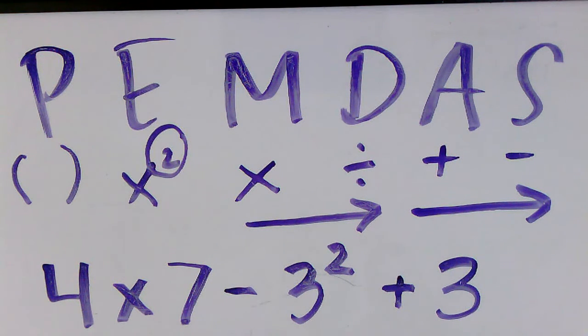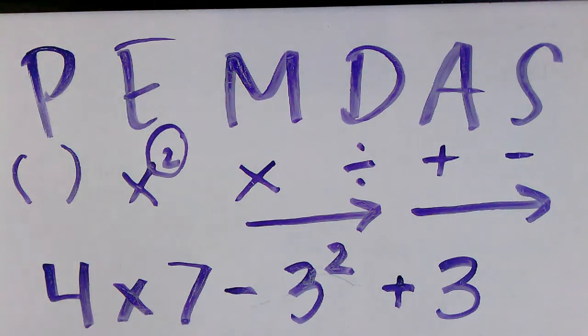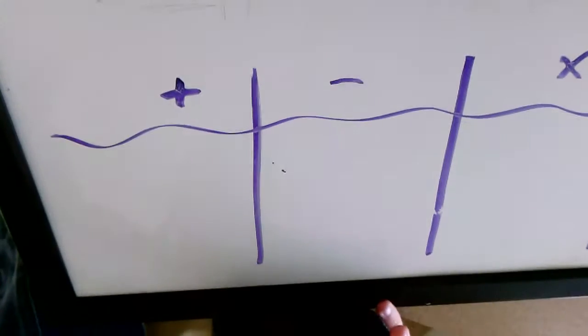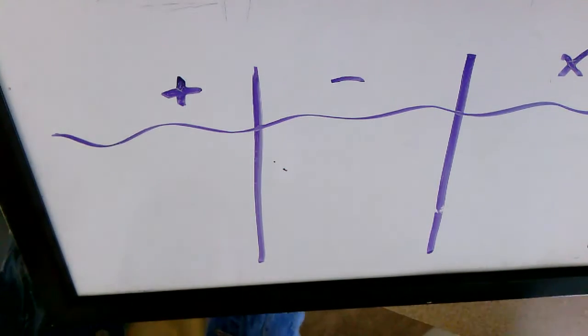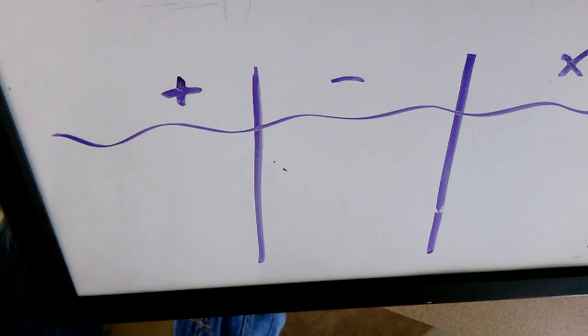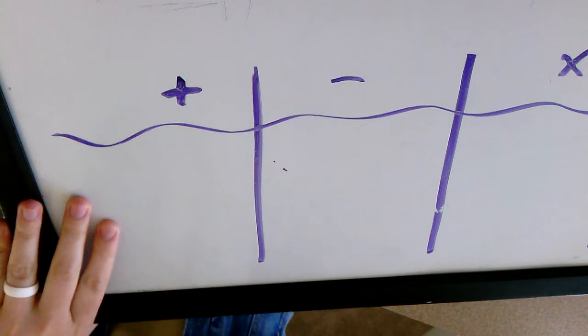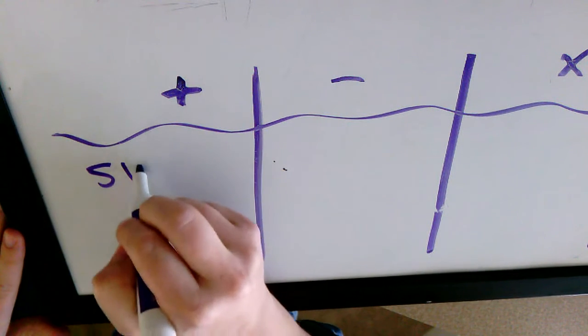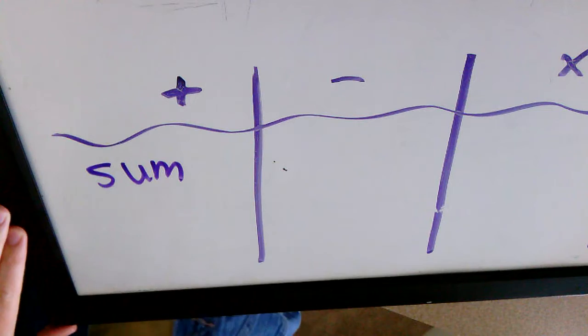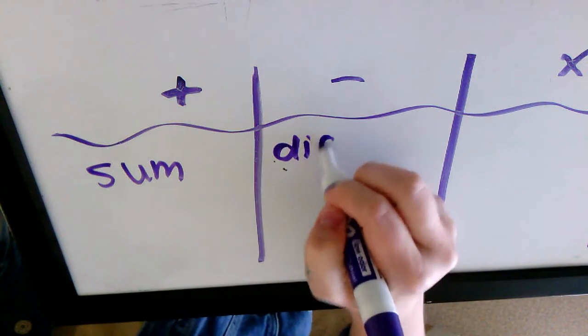I'm going to go over some terms you're going to see in the Go Formative that you may need a refresher on. When you're adding and subtracting, the answer for an addition problem is called the sum. You might also see the word difference for subtraction.